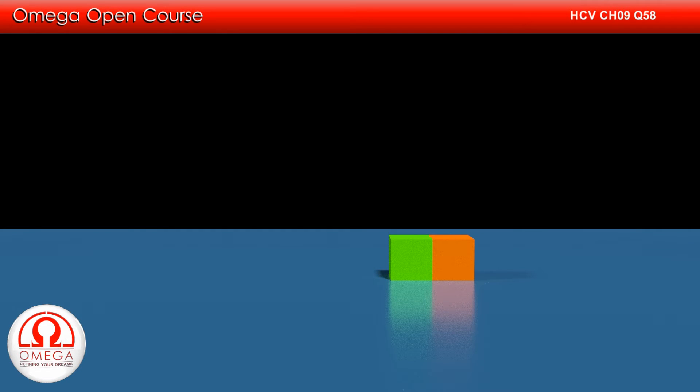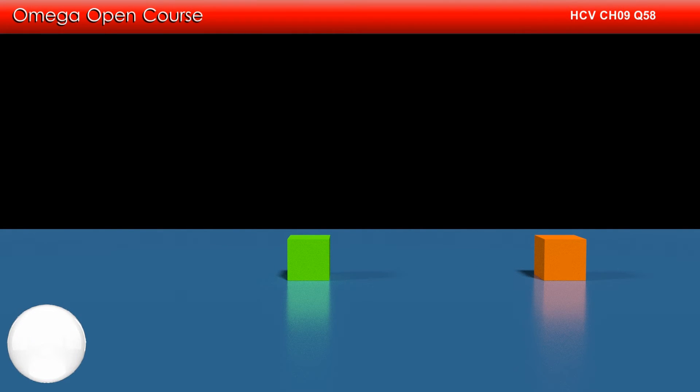Let us denote the initial speed of the green block by u. We know that when a body of mass m collides elastically with another body of equal mass, its entire momentum is transferred to the other body. Therefore, after the collision, the green block comes to rest and the orange block moves with the same speed with which the green block was moving, i.e. 10 meters per second.